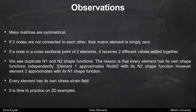After these two simple examples, we have some observations. Mass matrices are symmetrical. If two nodes are not connected to each other, their mass matrix element is simply zero. If a node is at a cross-sectional point of two elements, it receives two different values added together. We see duplicate N1 and N2 shape functions because every element has its own shape functions independently. Element 1 approximates node 2 with its N2 shape function, whereas element 2 approximates it with its N1 shape function. Every element has its own stress-strain field.